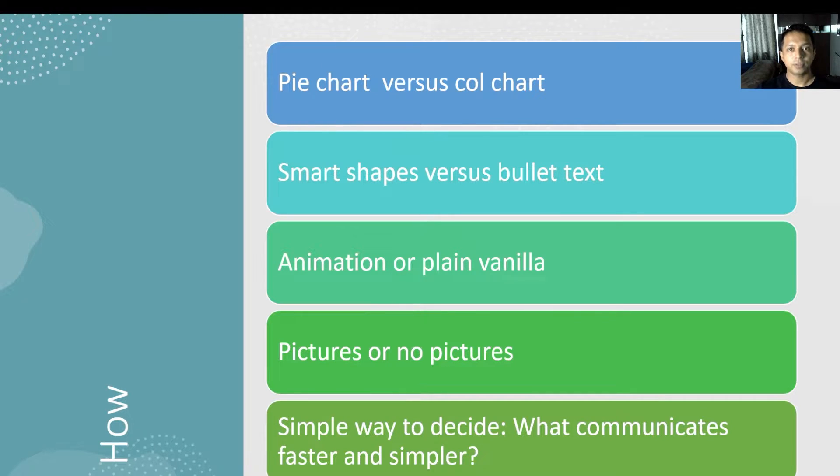For presentation, for example, you can use a pie chart or a column chart. Do you use smart shapes or just text? Do you use animation or keep it plain? Do you use pictures or no pictures?